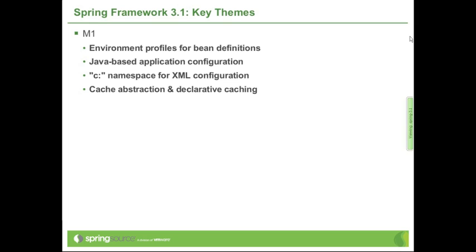I've grouped the features by milestone phase. The first milestone, to be released tomorrow, contains quite a bit of stuff — these are the four main things in M1, and they're really important. First, there's what we call the environment abstraction and environment profiles for bean definitions. This is one of the most significant additions to the XML and annotation-based programming model.